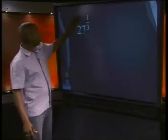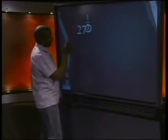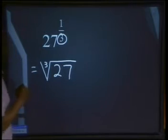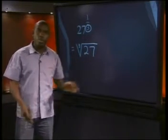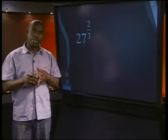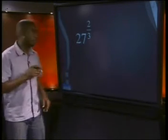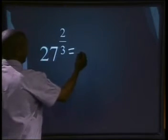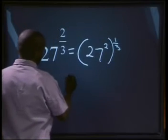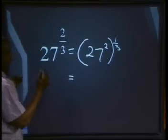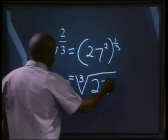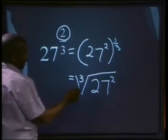How will we write 27 to the power of 1 over 3? The denominator becomes the root sign. This is how you write it with a root sign. If the exponent is 2 over 3, the denominator 3 tells you the root sign. But what about the numerator 2? We can write this as 27 to the power of 2, all to the power of 1 over 3. The denominator 3 represents the root sign, so we'll have the cube root of 27 to the power of 2. The 2, which is your numerator, is inside your root sign.